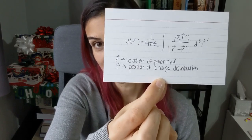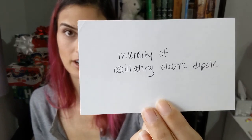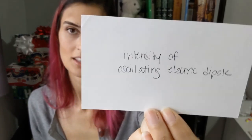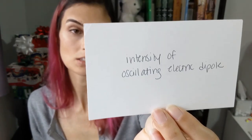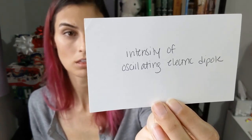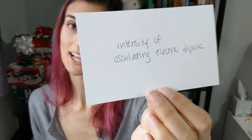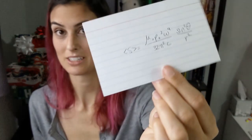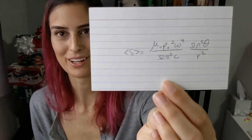Electromagnetism was not my strongest subject. Intensity of an oscillating electric dipole: the average value of S equals mu naught p naught squared omega to the fourth over 32 pi squared times C times sine squared theta over r squared. This didn't come up a lot.